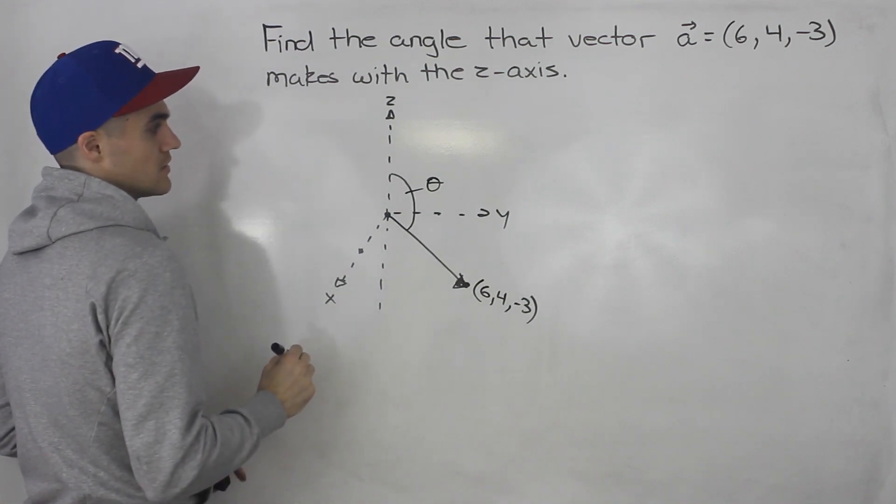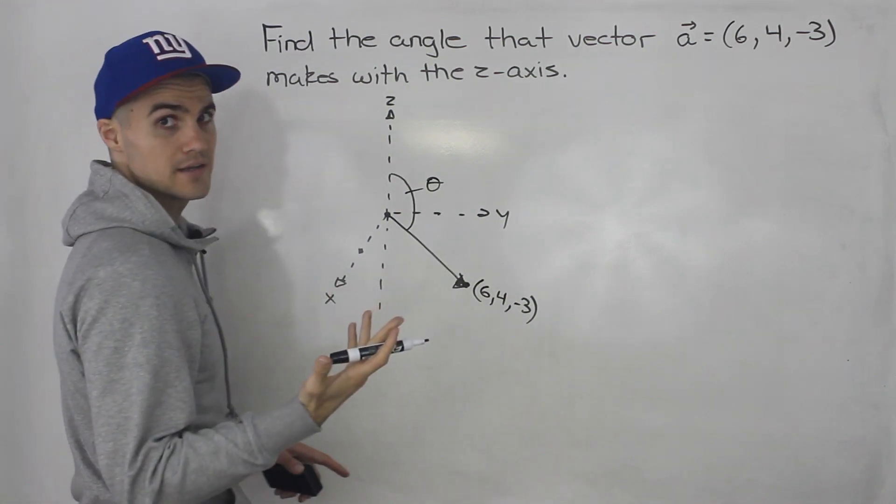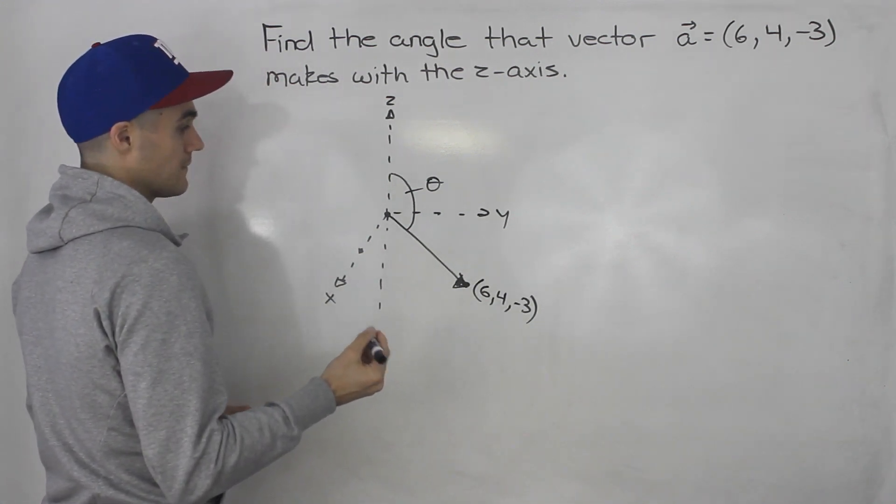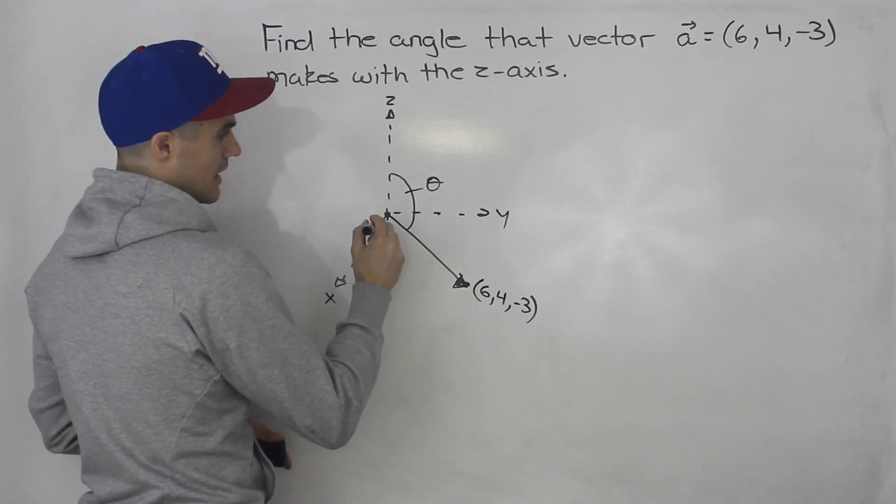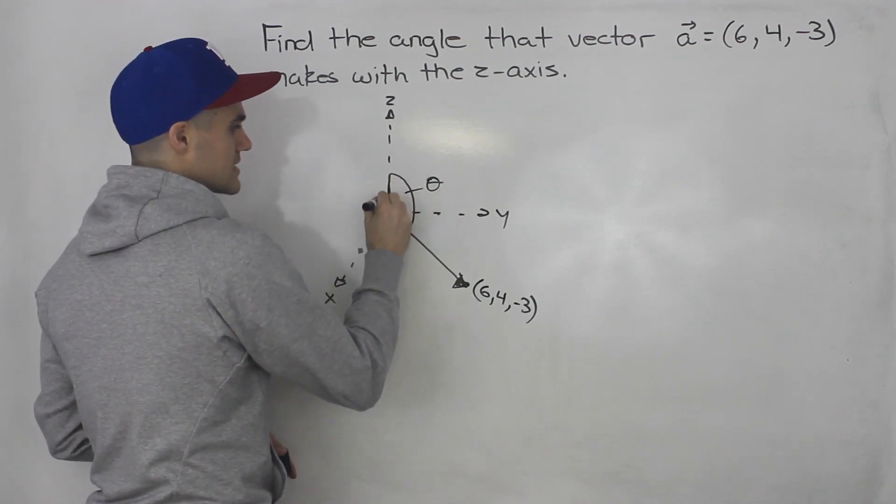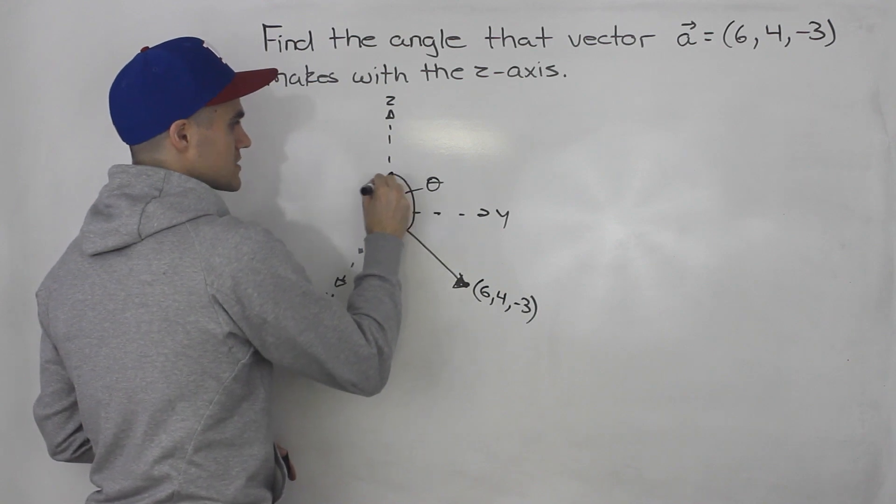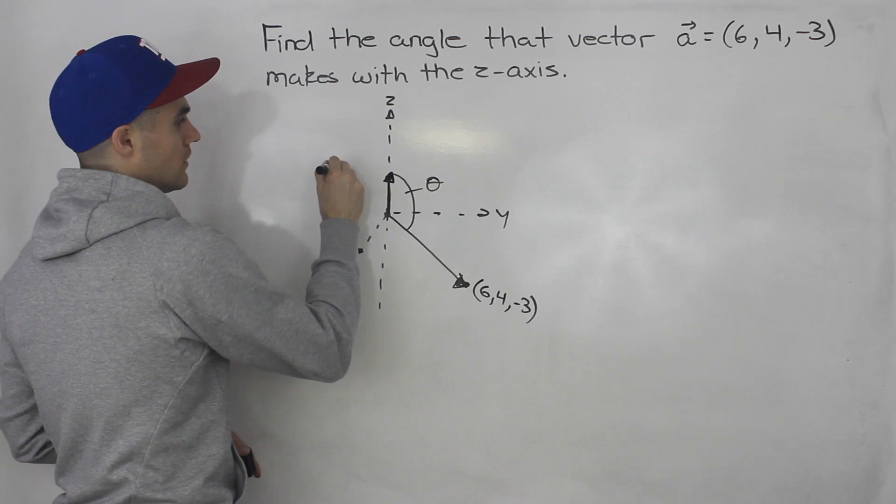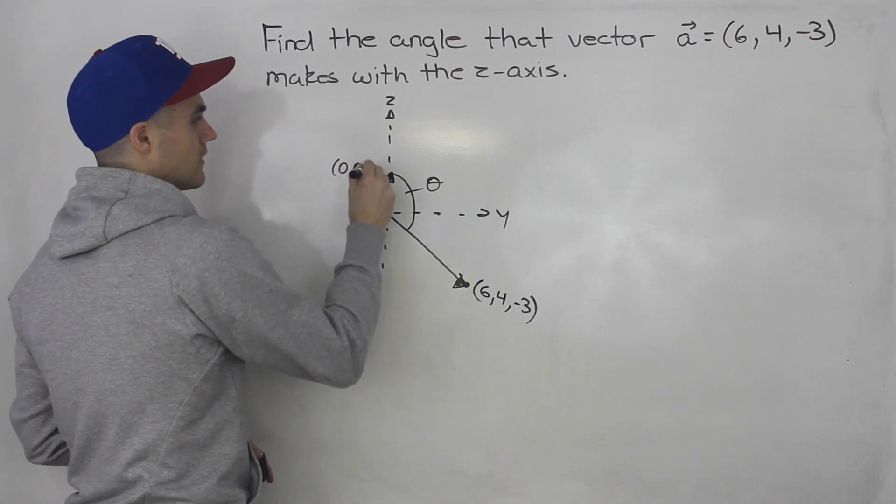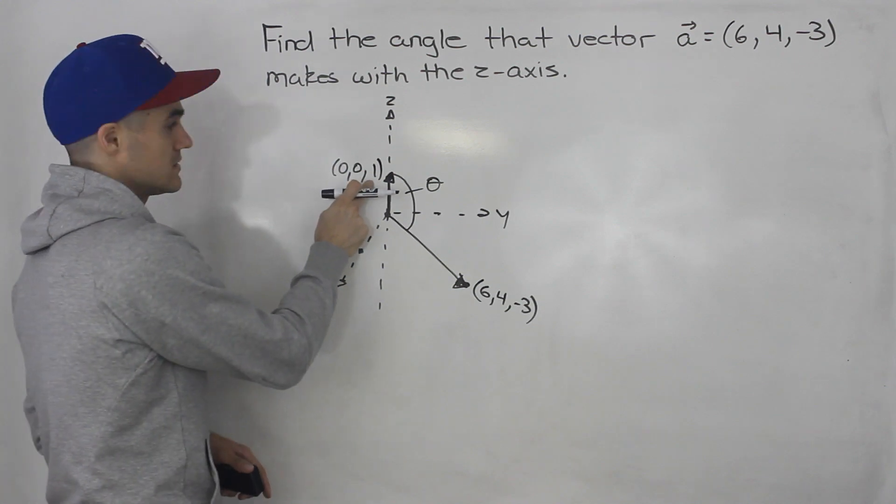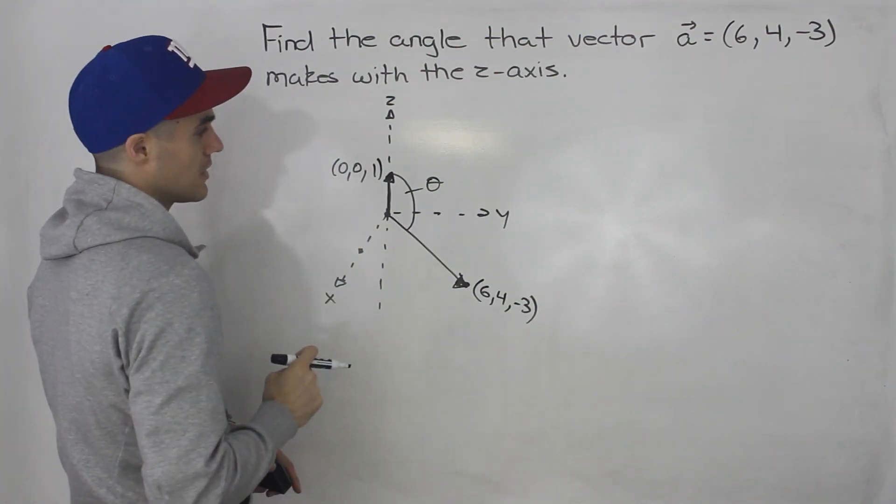So how can you do this? Well there's two ways. I'm going to show you a long way and then a short way. So starting off with the long way, notice that we can create a vector along the z-axis. And what's a super easy vector to create along the z-axis? Well 0, 0, and 1. Or 0, 0 in any number, but let's just pick 1 to keep things as simple as possible.